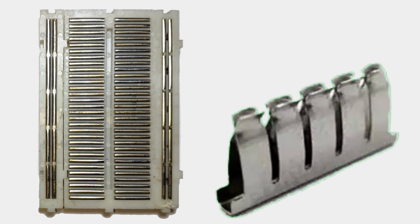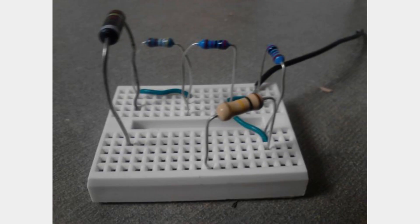The interconnected metal strips beneath the holes make electrical connections between components. When a component is inserted into a hole, its lead makes contact with the metal strip below, creating an electrical connection. Multiple components can be connected by placing their leads into appropriate holes on the same row or column.